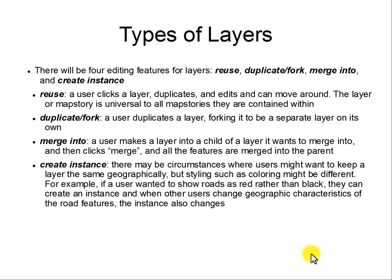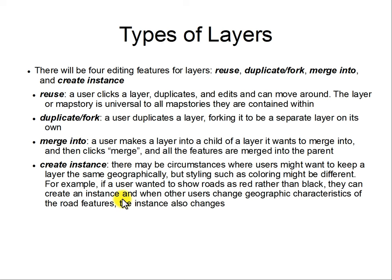One more thing I nearly forgot: we should really consider how layering is done. I think we should have four different kinds of layering. You should be able to reuse an existing story layer — an existing story layer or even an annotation can be universal, so it's updated everywhere it's edited. It would be nice to also have that for individual attributes or annotations. You can also duplicate and fork layers — those would be different, not reused — and you can do a merge. Another option would be instances — basically reusing an existing layer or attribute but styling it differently in different contexts.